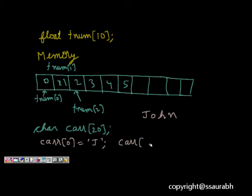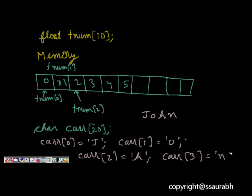carr[1] is equal to O, carr[2] is equal to H, and carr[3] is equal to N. So this way we have allocated the first 4 characters to the first 4 indices of the carr array.